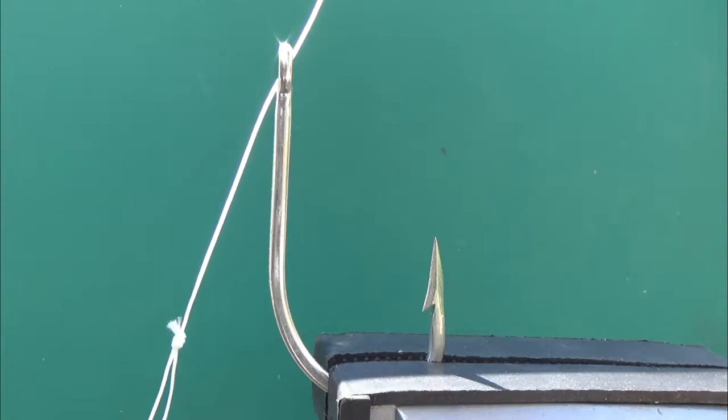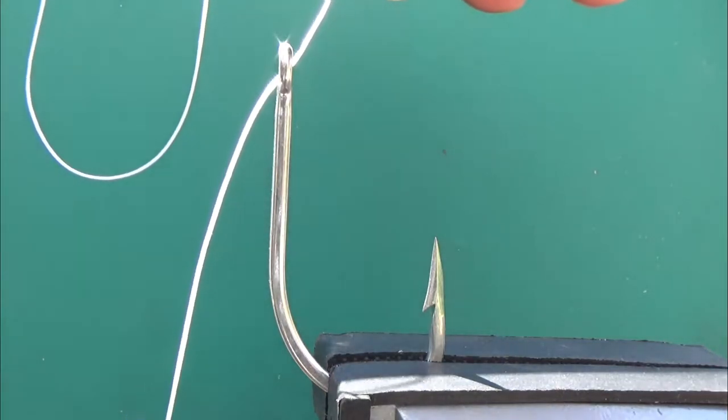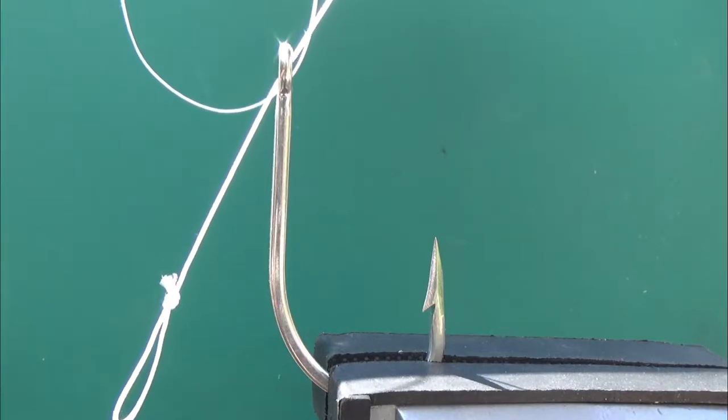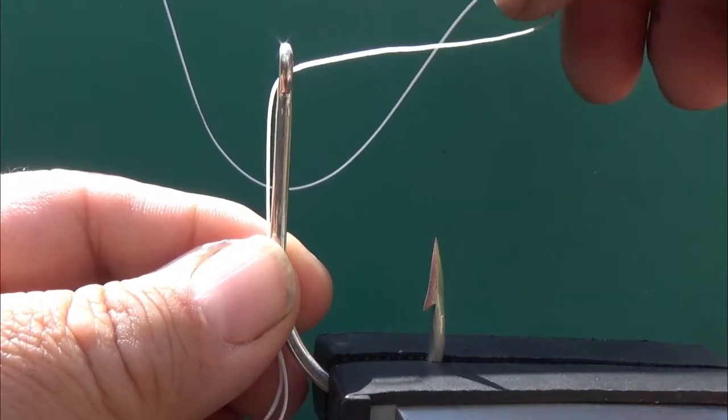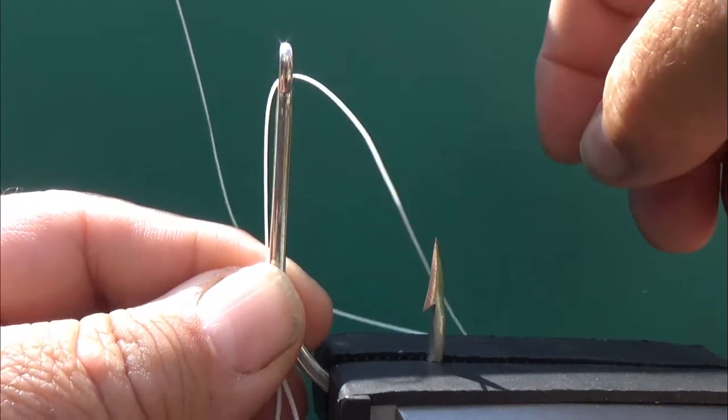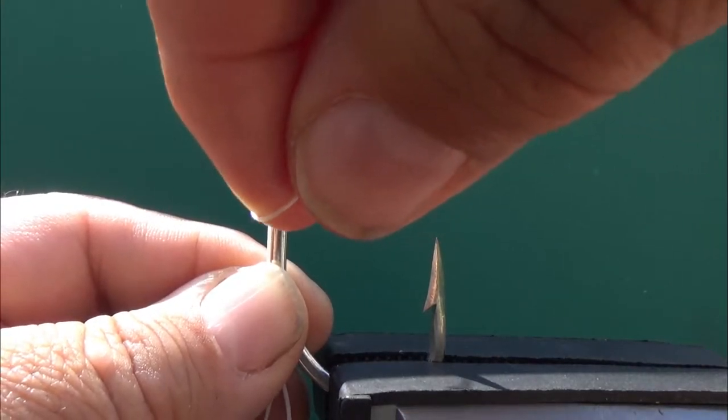Put the line end through the outside of the hook towards the point, then you decide exactly where you want the line. I normally have mine on the bend of the hook. That way it's close enough so that when the fish suck it in, they suck in the band and the hook together.